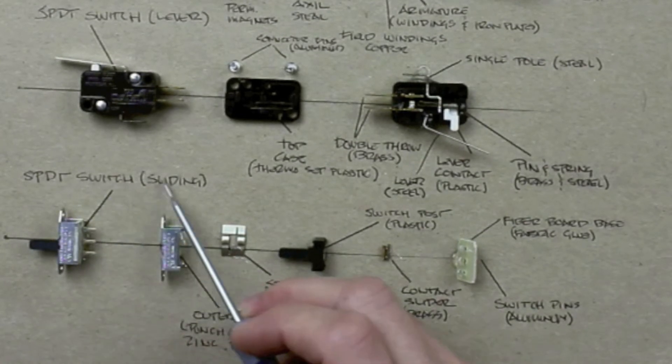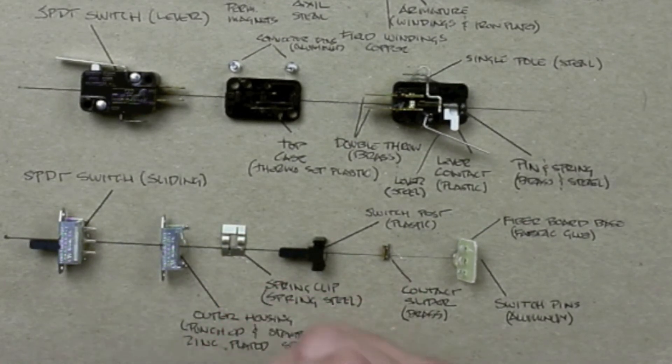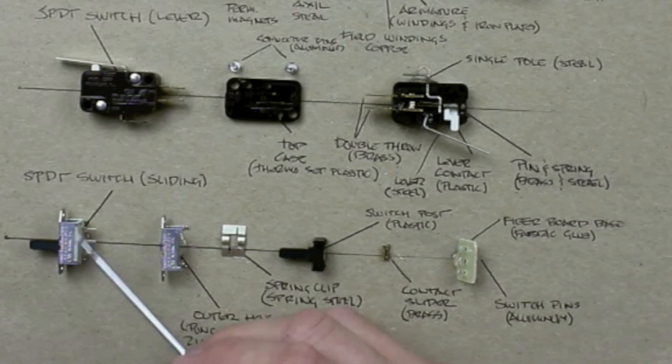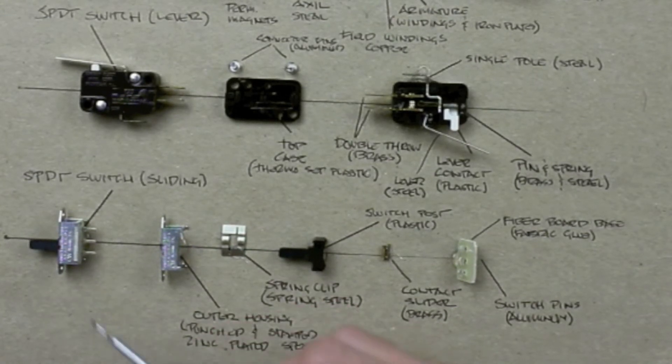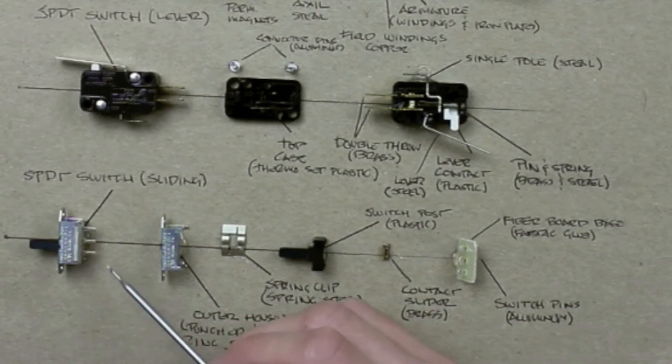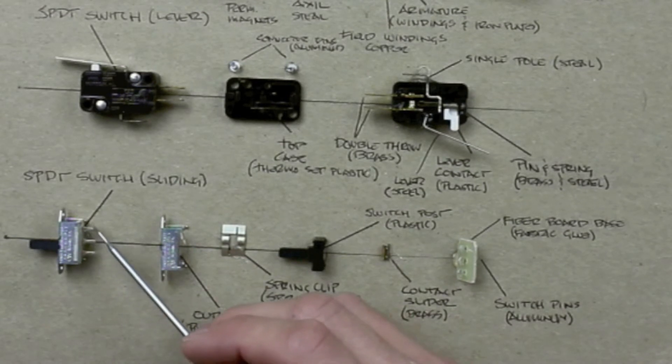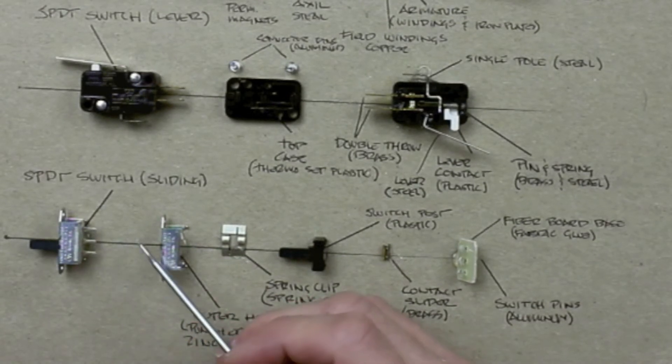Now we're going to talk about a single pole double throw sliding switch. We're only using this as a single pole single throw switch. So we're not using the two throws that come with it. We're only using one of them. We're using this switch as an on-off switch.